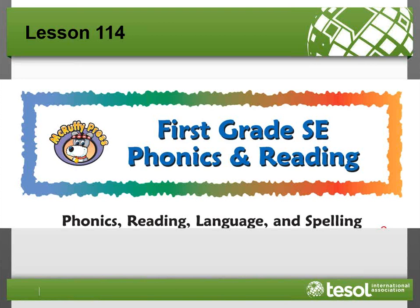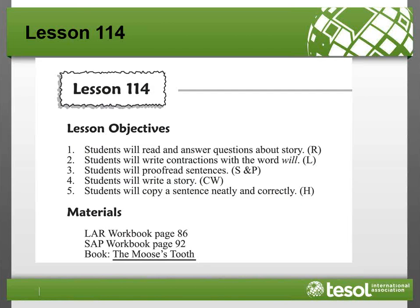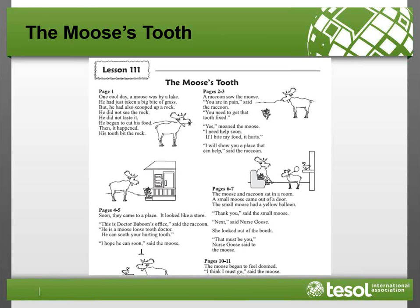We're going to look at lesson 114. I encourage you to download a copy of the text and lesson 114 from the Module 6 discussion board — you might want to pause this presentation to make sure you have the text and lesson downloaded. For this presentation, we're describing ways of scaffolding activities aligned to objectives one, two, and four. Objective one: students will read and answer questions about the story. Objective two: students write contractions with the word 'will.' Objective four: students will write a story. This instruction is based around a text called 'The Moose's Tooth.'